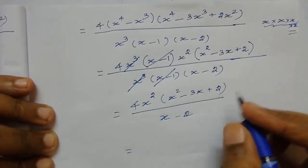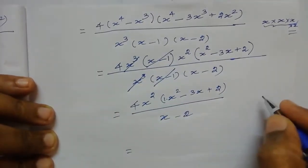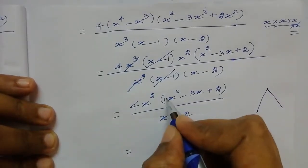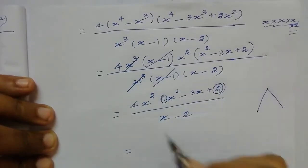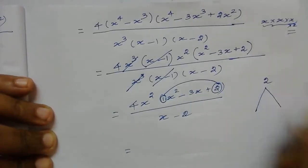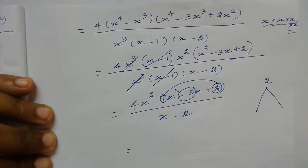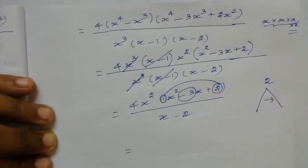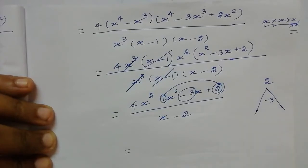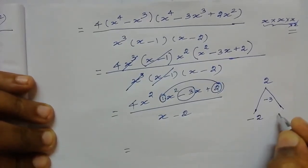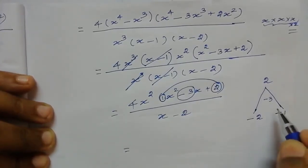To factorize the quadratic, we need the product of factors and sum of factors. The product of factors is: coefficient of x² × constant term = 1 × 2 = 2. The sum of factors is the coefficient of x, which is minus 3. We need two numbers whose product is 2 and sum is minus 3: those are minus 2 and minus 1.